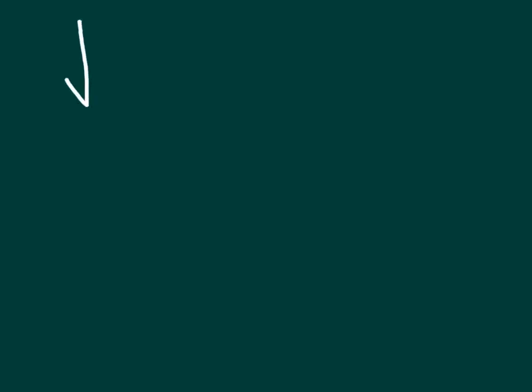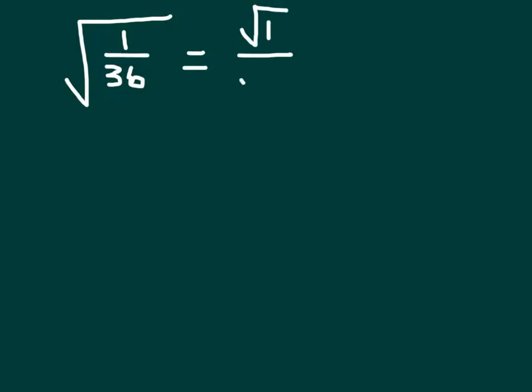Finding the square root of a fraction is done the same way that you find the square root of a regular number. If we start out with the square root of 1 over 36, that is the same thing as the square root of 1 over the square root of 36. So we get the square root of the numerator, which is 1.